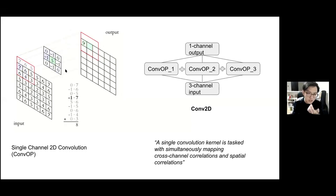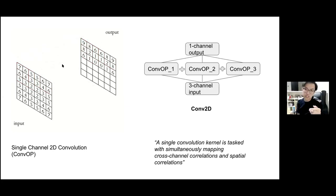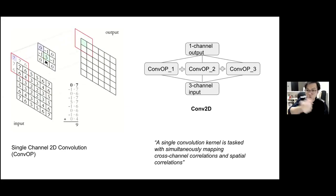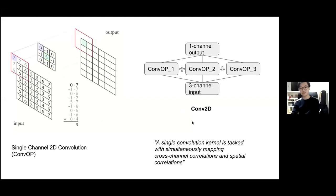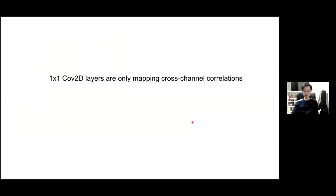Let me read the quote from the paper: 'A single convolutional kernel is tasked with simultaneously mapping cross-channel correlations and spatial correlations.' We know the Conv2D operation does spatial correlations. Where is cross-channel correlation happening? It's because of this sum - element-wise summing. So when you use Conv2D, you simultaneously map cross-channel correlations and spatial correlations. If it's a 1x1 kernel, it's basically constant multiplication. There's no spatial correlations, but you still have cross-channel correlations.